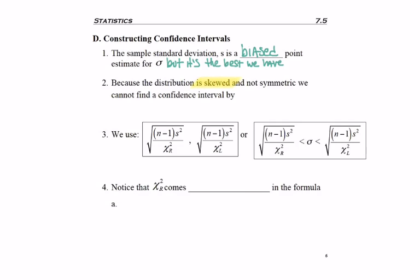Now remember, our distribution is skewed. So since it's not symmetrical, we're not going to be able to do the confidence interval the way we were before. We can't take our sample standard deviation and add or subtract E. Remember that just stands for the point estimate plus or minus the margin of error.